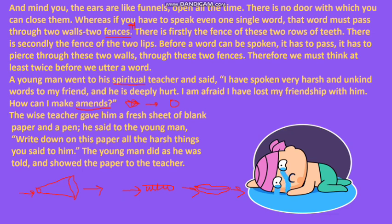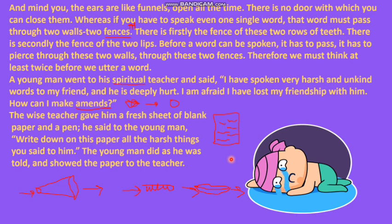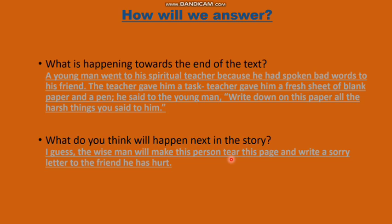The wise teacher gave him a fresh sheet of blank paper and a pen. He said to the young man, 'Write down on the paper all the harsh things you said to him.' The young man did as he was told and showed the paper to the teacher. Write down everything wrong and harsh that you said to your friend. Notice that as I explain, I am also drawing side by side — it helps understand the text better. Even you can try to do it.